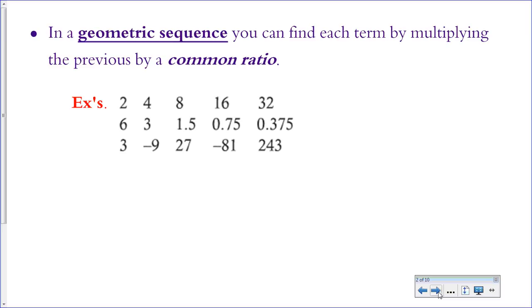In the third example, whenever you have signs that alternate like that — first term positive, second term negative, third term positive, and so on — that means the common ratio is going to be a negative number. So here you're multiplying by negative 3 each time.